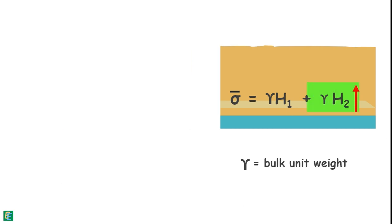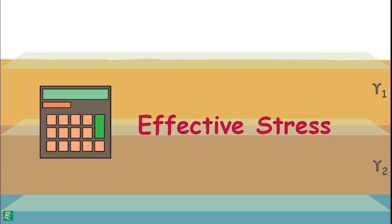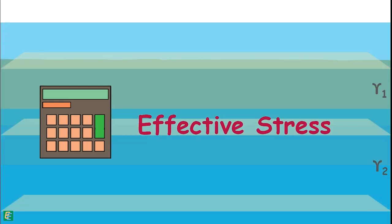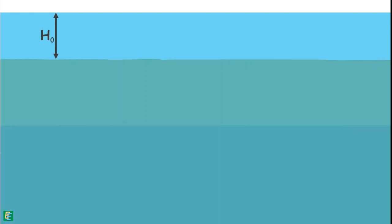Now consider a different soil condition where the soil mass consists of two different soil deposits which have different bulk unit weights, gamma_1 and gamma_2. We will calculate the values of effective stress at different sections of this soil deposit with different hydrostatic conditions. Let us begin by imagining the water table is above the soil mass at a height H0. These soils become saturated, so their bulk unit weights become gamma_sat1 and gamma_sat2. Thickness of the top layer is H1 and the bottom layer is H2.